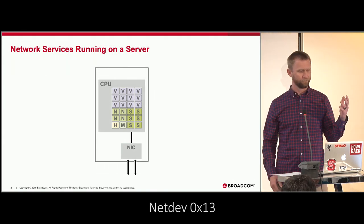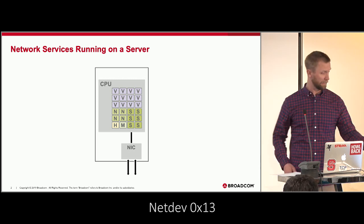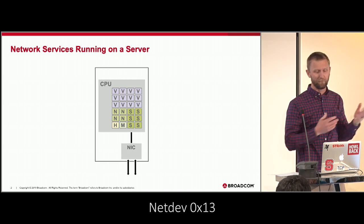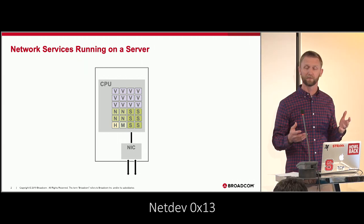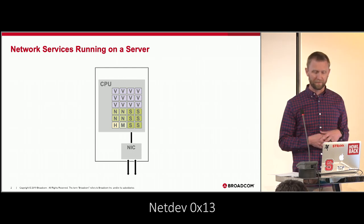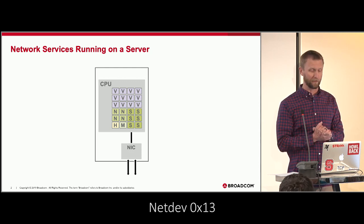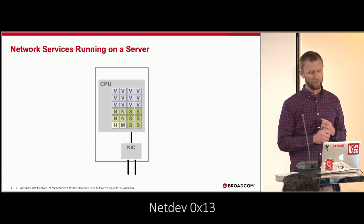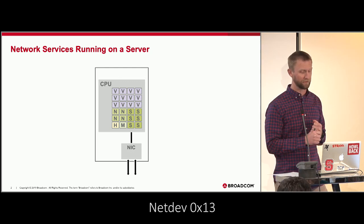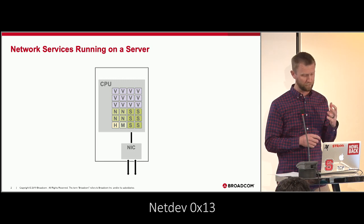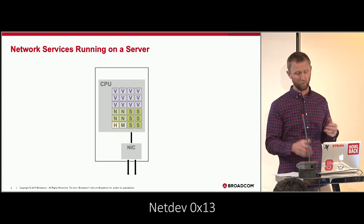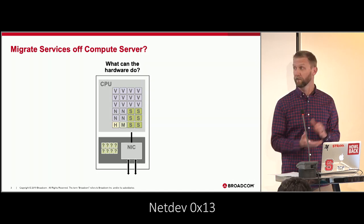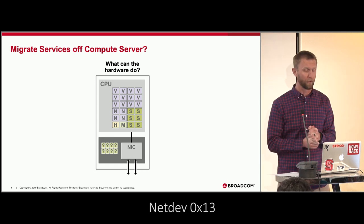Think of a typical 24-core server. Maybe half those cores are available for actually running virtualized applications — whether containers, VMs, or whatever. Because you're running Open vSwitch, you decide to allocate four cores for networking. You might also have some storage backing — those are the S's. H would be the hypervisor, and M would be management networking. The question is: can you migrate some of these off? What if you had fancy hardware offload?